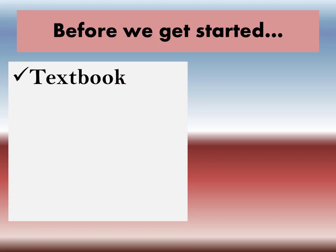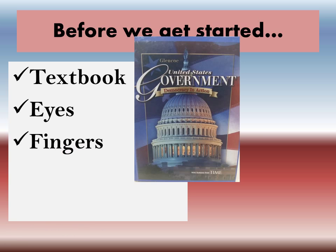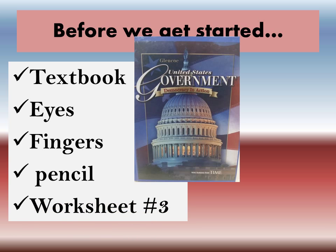Good morning everybody. Before you get started, you need to make sure that you have your materials. The first thing you need is your textbook, which is located in the corner of the room on the file cabinet next to the windows — you can take it but make sure you return it at the end of class. You also need your eyes and your fingers: your eyes because we're going to be glancing through the textbook, and your fingers to flip through the pages. You also need a pencil or a pen; if you need a pencil, come get it from me.